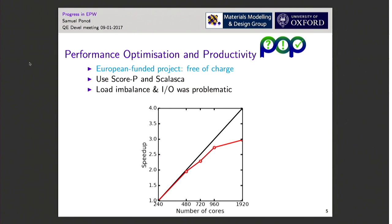This helped us detect some load imbalance due to k-point splitting and also some IO issues. After solving those, the speedup was much better. Before, the code was decently scaling up to around 200 cores maximum, and the goal was to reach 1,000 cores. By doing this analysis it was possible to get decent scaling up to about 1,000 cores, so that was quite useful.